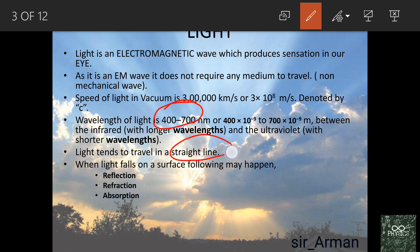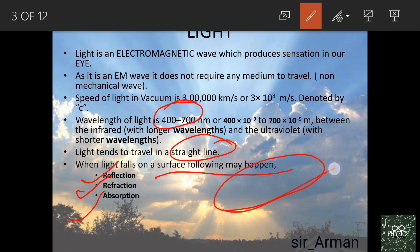Light tends to travel in a straight line. Another property of light is that when it falls on any surface, mainly three phenomena occur: it may reflect (bouncing back), it may refract (bending, with velocity change), or it may get absorbed. In summer, when light falls on a surface it gets heated because the surface absorbs energy from the light.